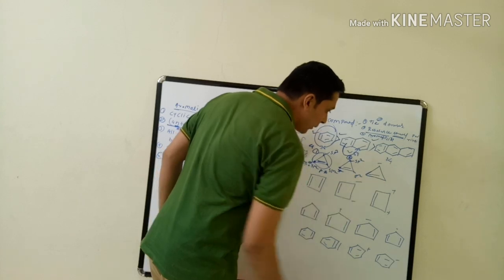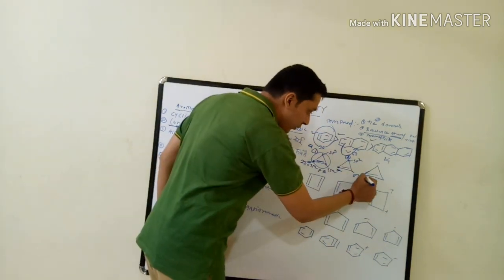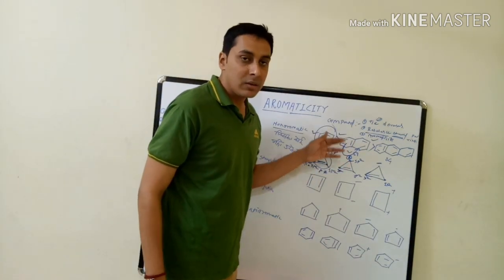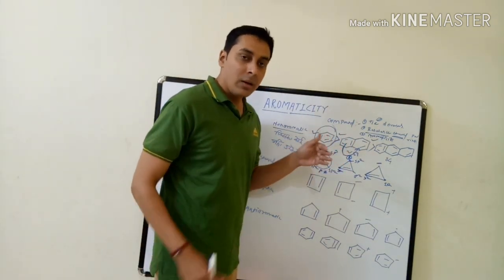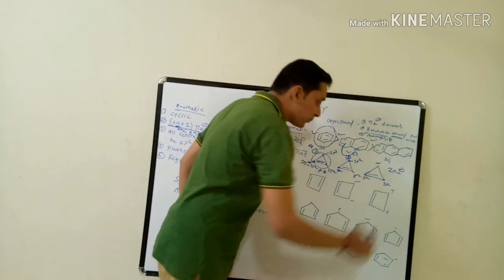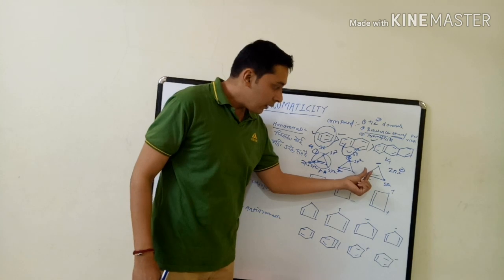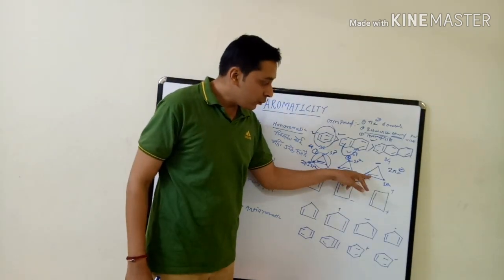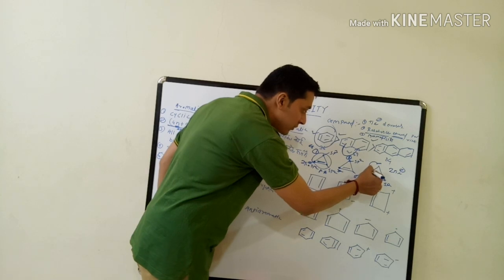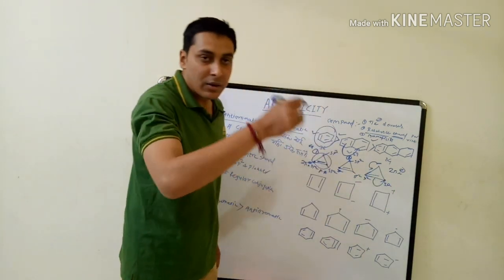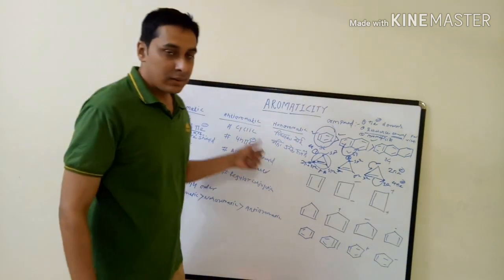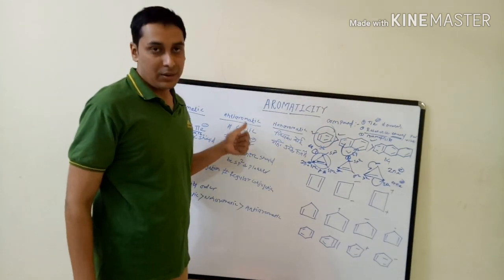Third example: a three-membered ring with a negative charge. The carbons are sp2-hybridized, and the negative charge contributes two pi electrons. This ring is cyclic with two pi electrons from the double bond plus two pi electrons from the lone pair — total four pi electrons — in regular conjugation. Four pi electrons follows the 4n rule (n=1), so it is anti-aromatic.